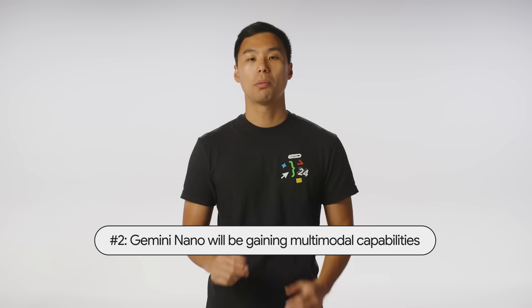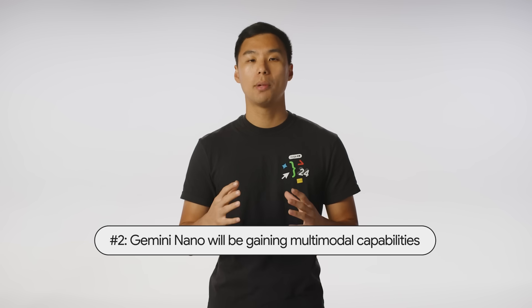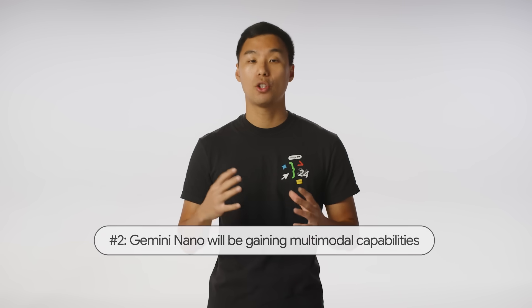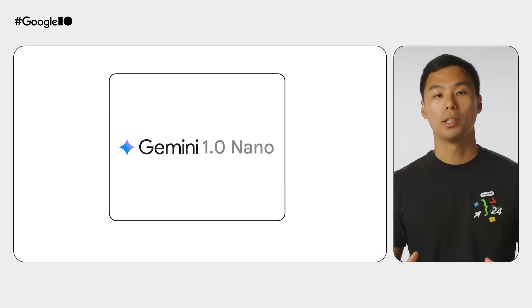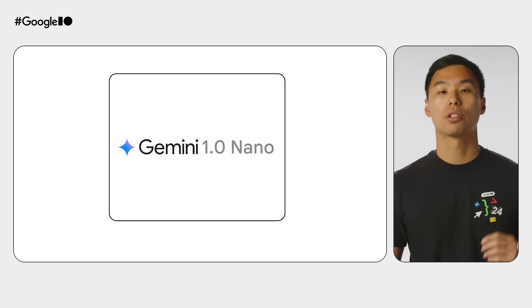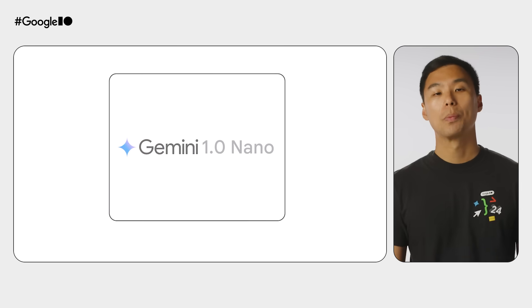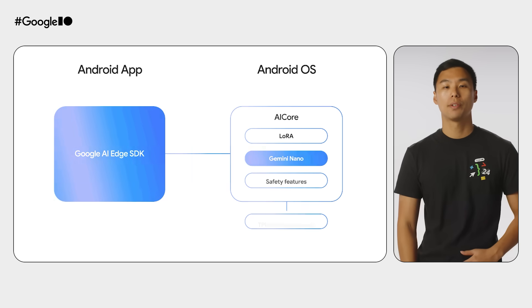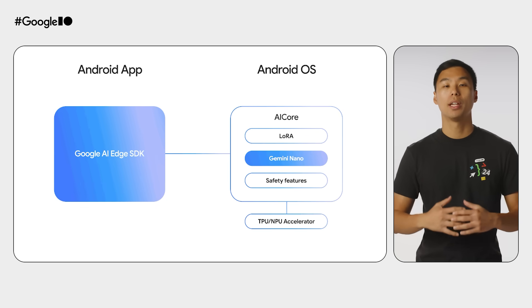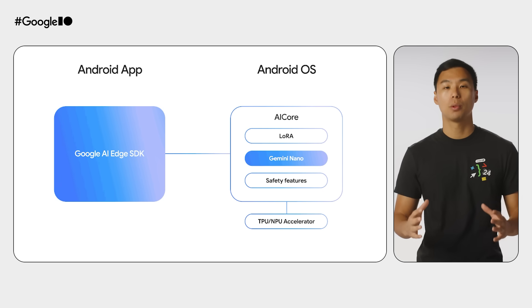Number two: Gemini Nano, our recommended model for on-device Gen AI, will gain multimodal capabilities later this year, starting with Pixel. It's supported by AI Core, a system service enabling apps to run inference on-device without maintaining their own models.